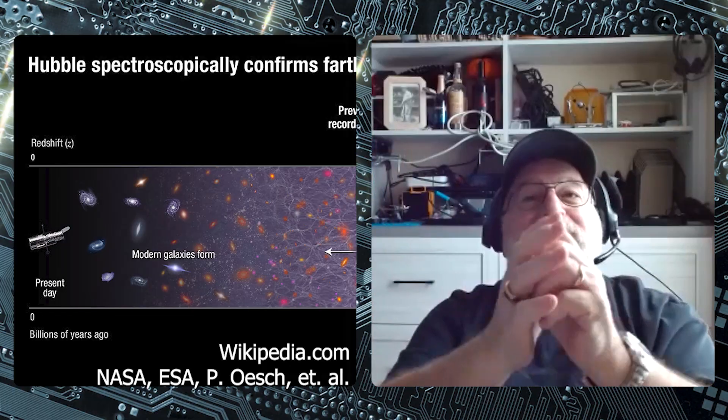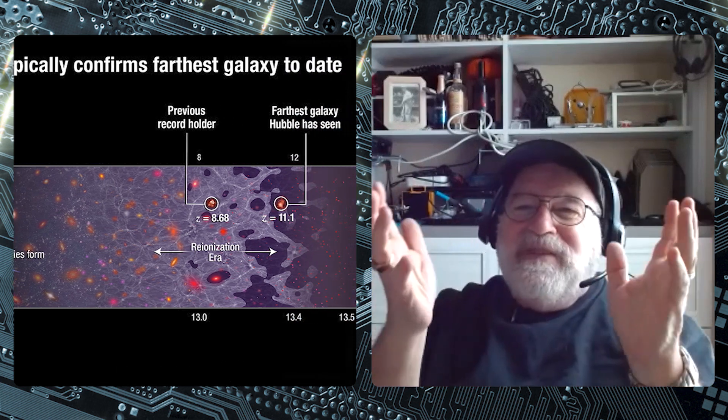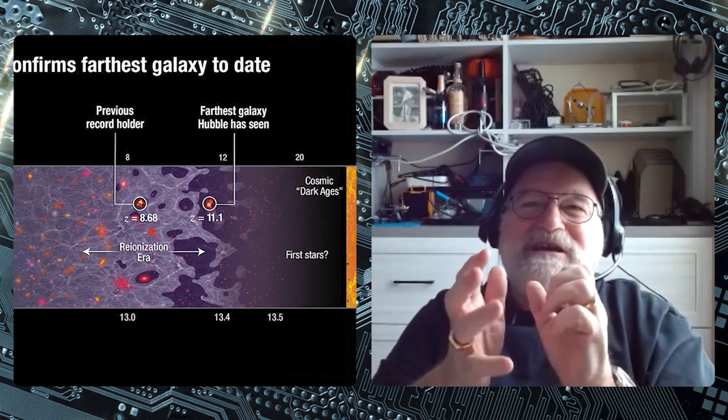My undergraduate thesis professor, Professor John King, did a measurement of how similar the charge of the electron and the proton are. If there was a difference between those two charges, an atom would have a net charge. If a proton was a tiny bit more positive than the electron is negative, a hydrogen atom would be net positive, all matter would be net positive, and matter would want to repel each other — possibly accounting for the expansion of the universe. You only need something like a part in 10 to the 12 difference. It's a really important fundamental question.